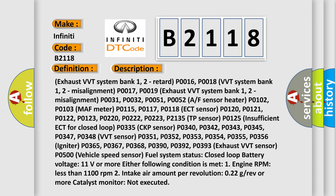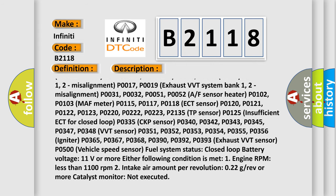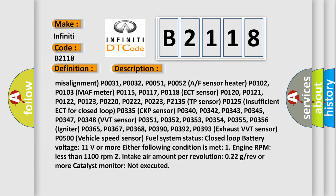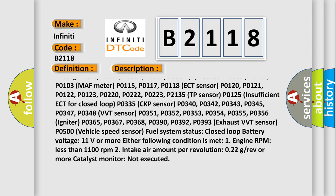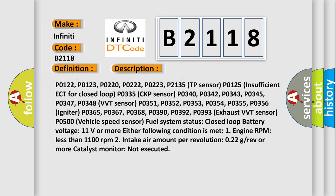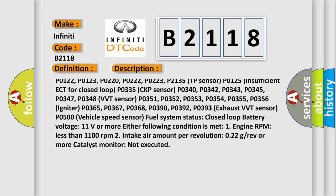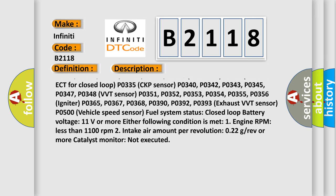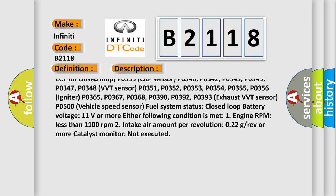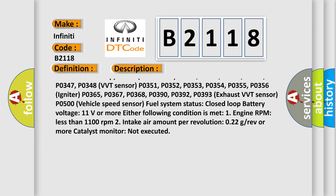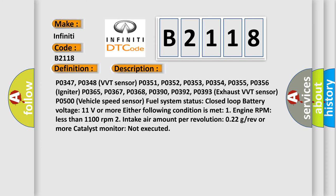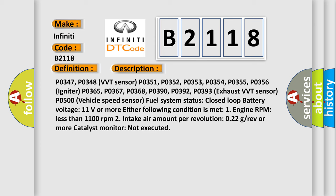Additional DTCs that must be absent: P0031, P0032, P0051, P0052 (AF Sensor Heater); P0102, P0103 (MAF Meter); P0115, P0117, P0118 (ECT Sensor); P0120, P0121, P0122, P0123, P0220, P0222, P0223, P2135 (TP Sensor); P0125 (Insufficient ECT for Closed Loop); P0335 (CKP Sensor); P0340, P0342, P0343, P0345, P0347, P0348 (VVT Sensor); P0351–P0356 (Igniter); P0365, P0367, P0368, P0390, P0392, P0393 (Exhaust VVT Sensor); P0550 (Vehicle Speed Sensor). Fuel system status must be Closed Loop and battery voltage 11 volts or more.